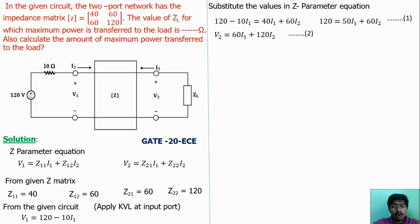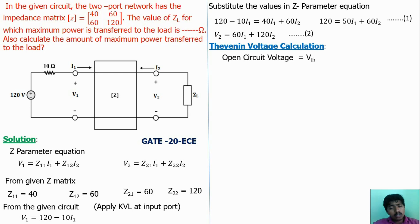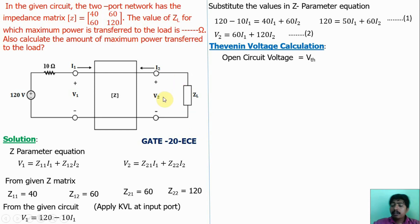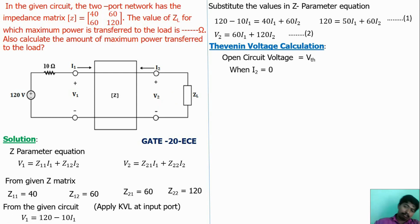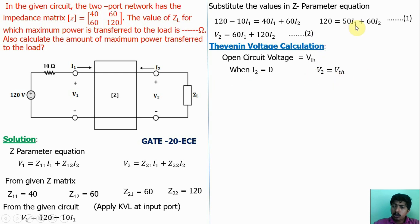Now find the Thevenin voltage. The Thevenin voltage means the open-circuit voltage. If the load is open, the load voltage will be VTH. So V2 = VTH when I2 = 0. Substitute these values into equations 1 and 2.